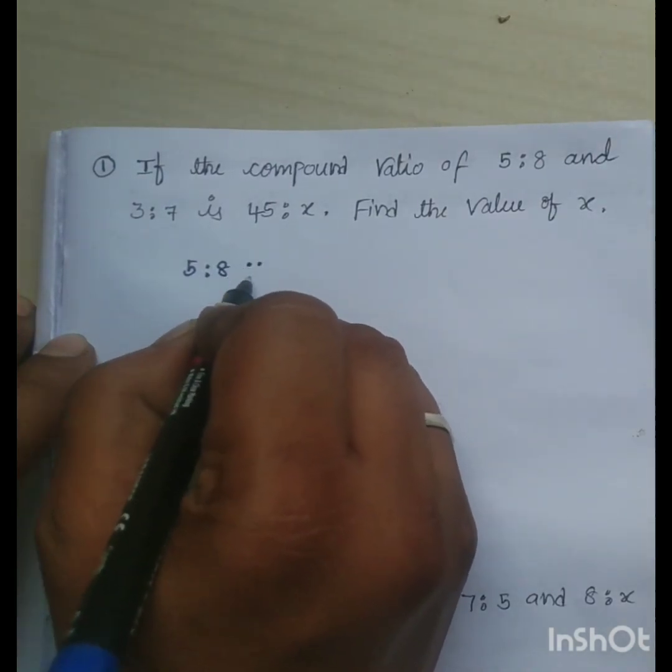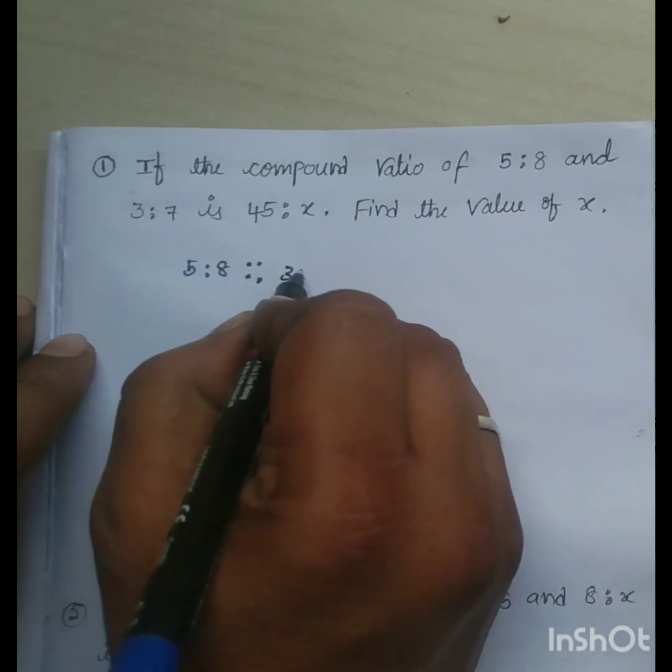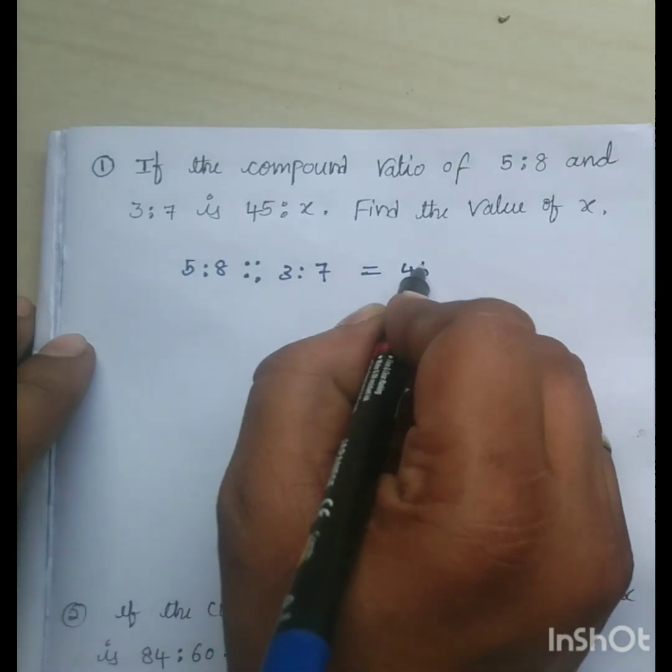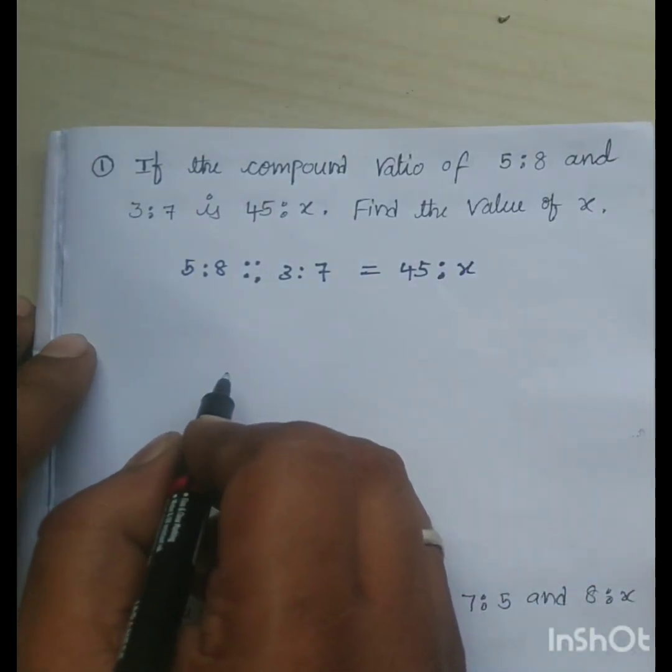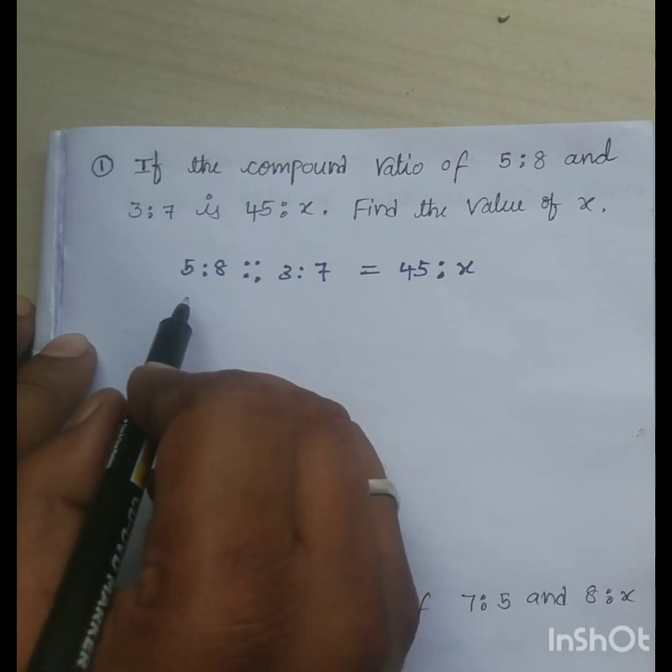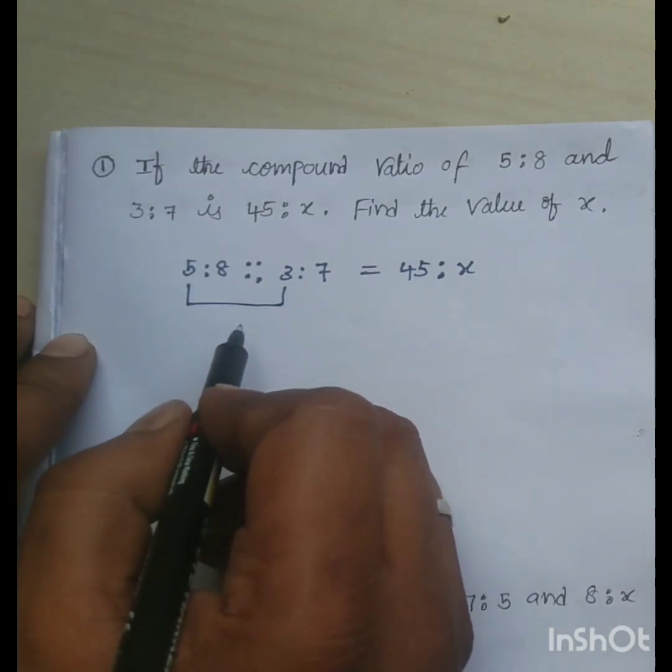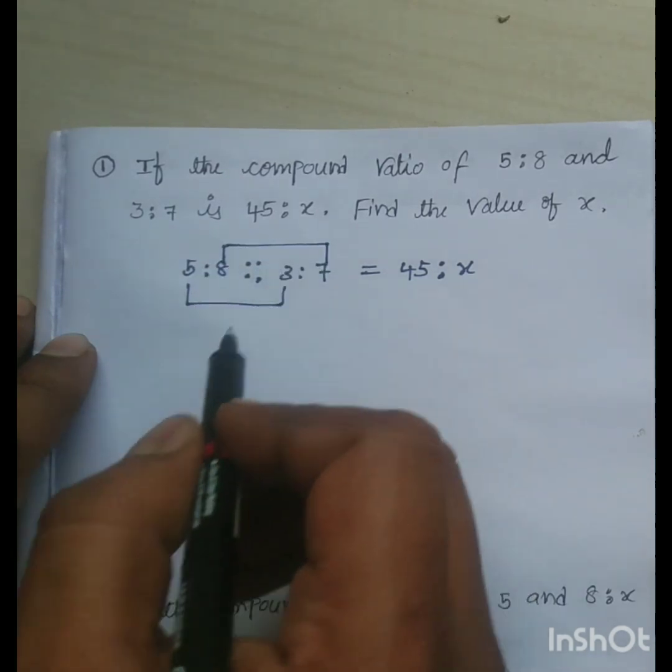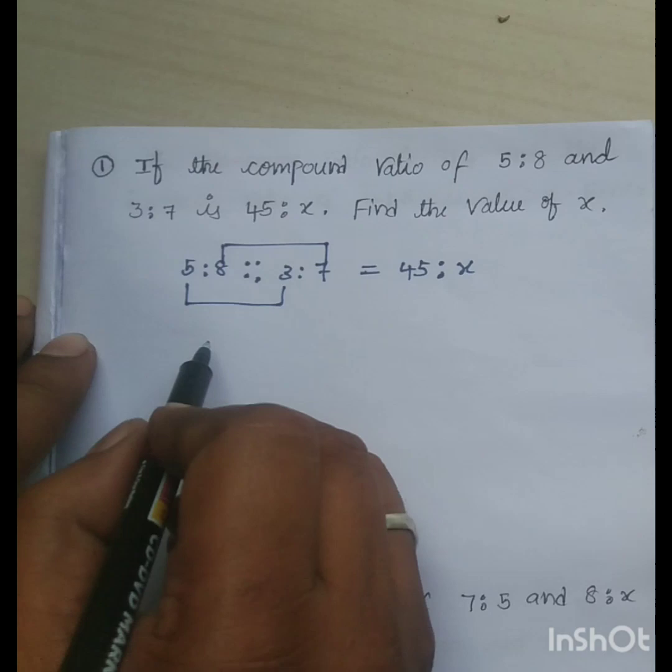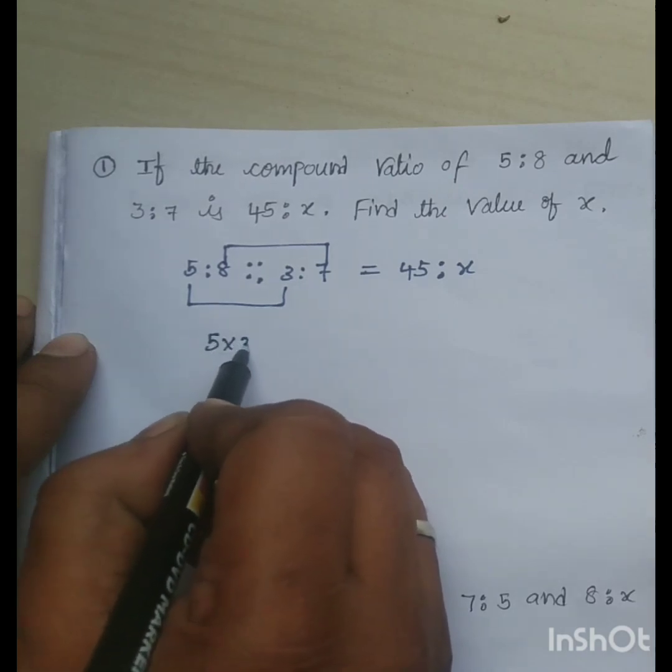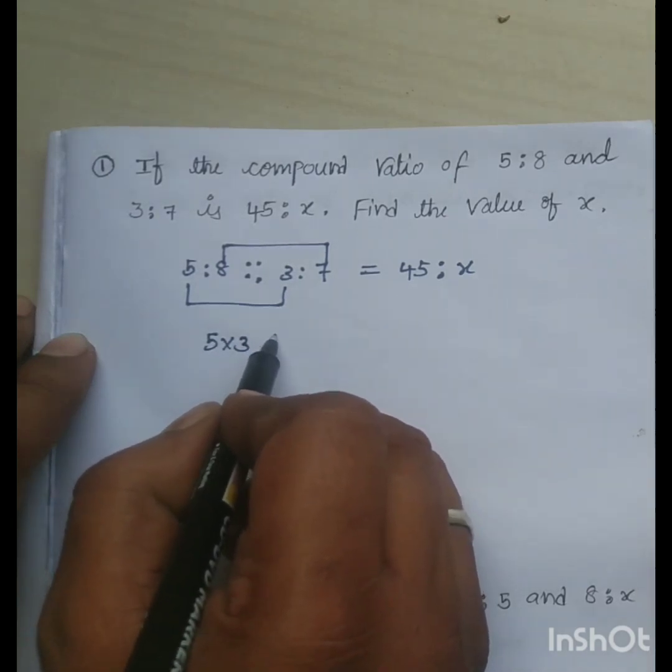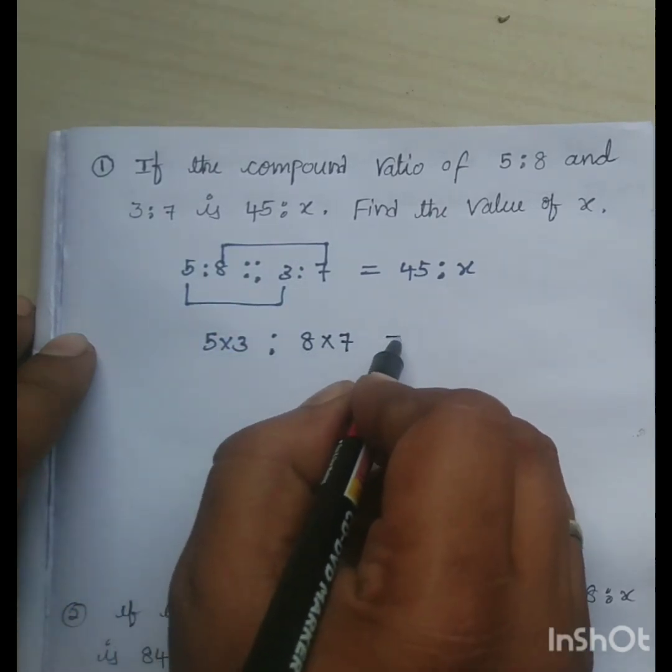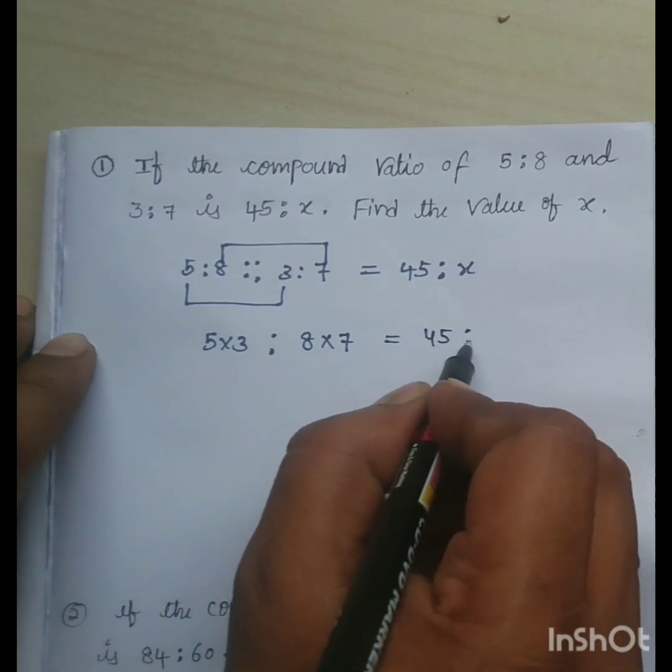5 is to 8 as 3 is to 7 is 45 is to X. So, here in compound ratio, product of antecedents is equal to product of consequences. Here antecedents are 5 and 3. Product means 5 into 3, is to product of consequences. Product of consequences are 8 and 7 is equal to 45 is to X.